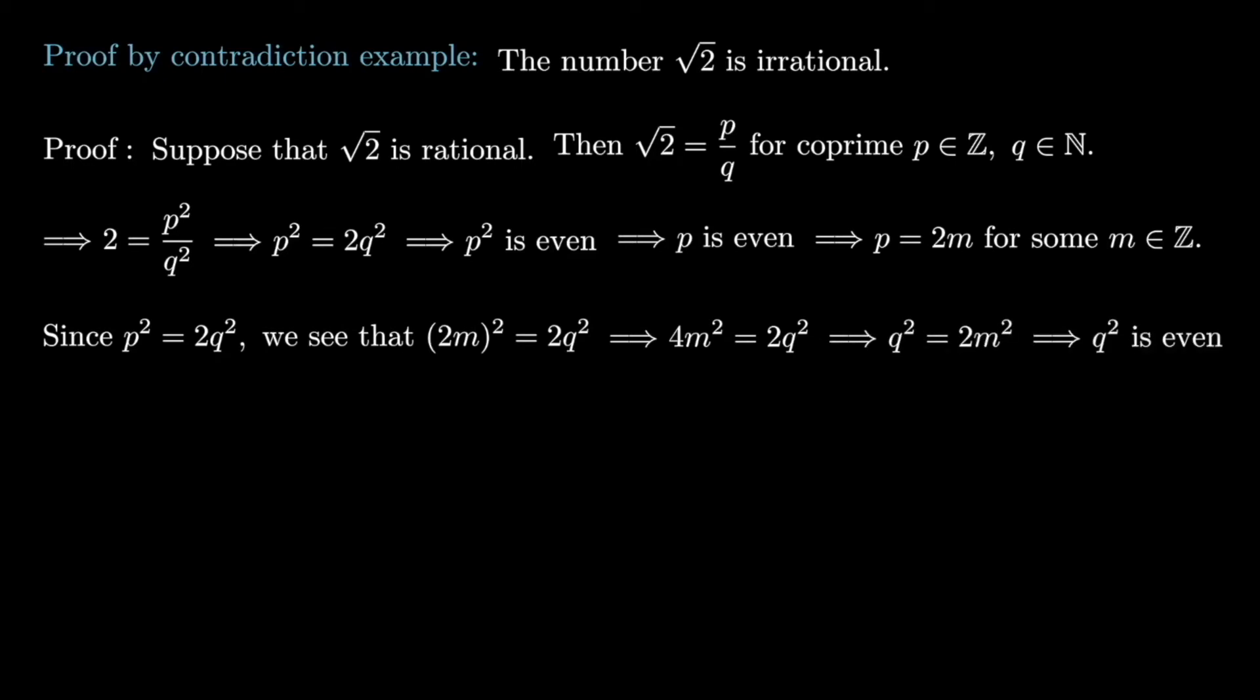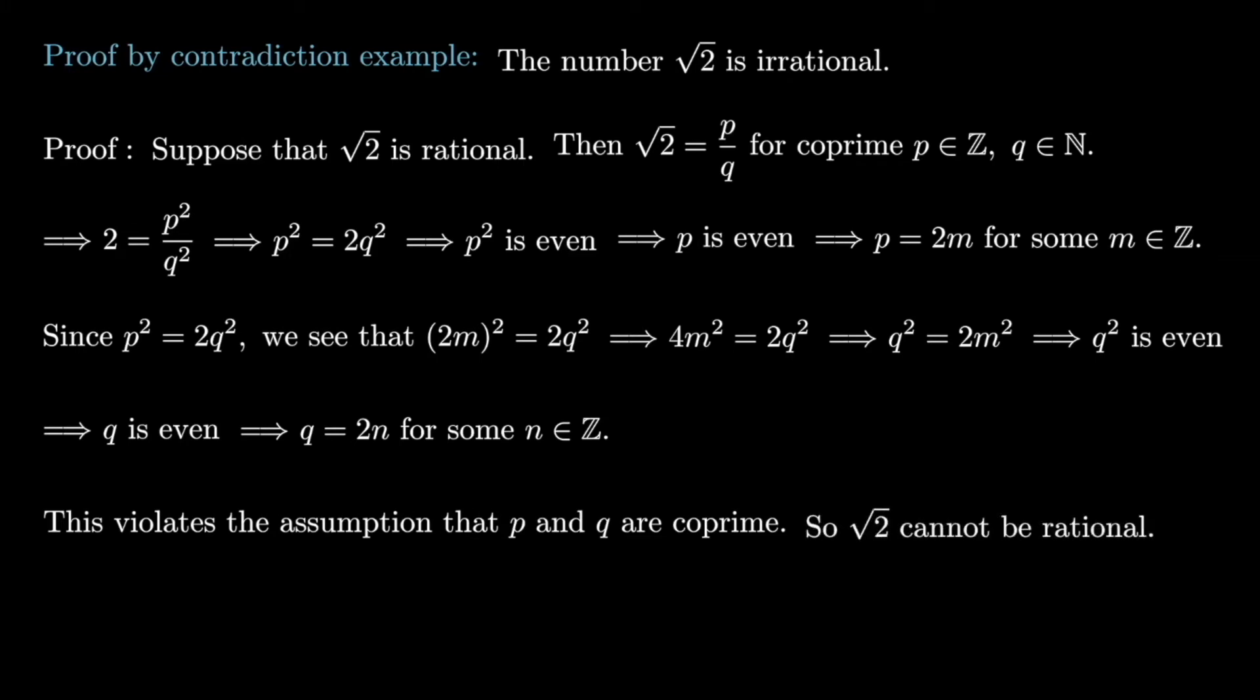But by what we saw before, if q squared is even, q must be even, and so q is equal to 2n for some integer n. But remember, we assumed that p and q were co-prime, meaning the greatest common divisor between them was 1, and we've just violated that. We've shown that they're both divisible by 2. And so, root 2 cannot be a rational number.